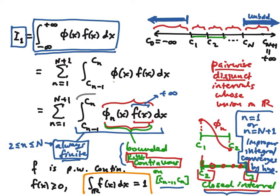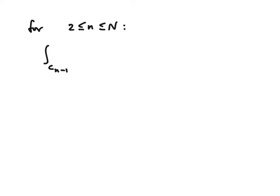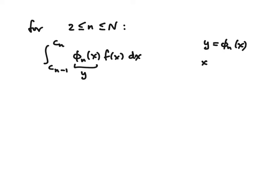For little n between two and big N, where we have a simple integral over a closed interval with a piecewise continuous integrand, the change of variables I want to make is to call this y, and we can invert that by writing x as φ_n inverse of y, because φ_n is a one-to-one function. Then dx is going to be the derivative of φ_n inverse times dy.